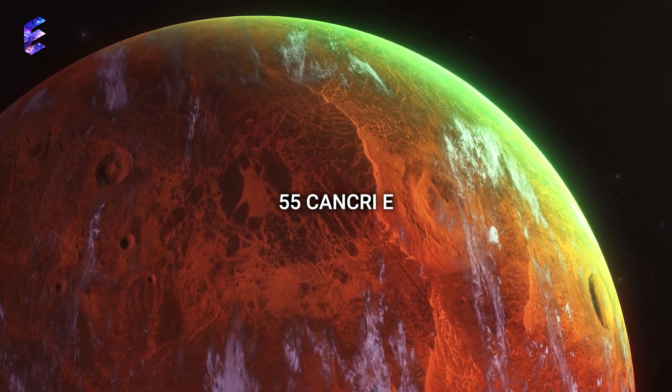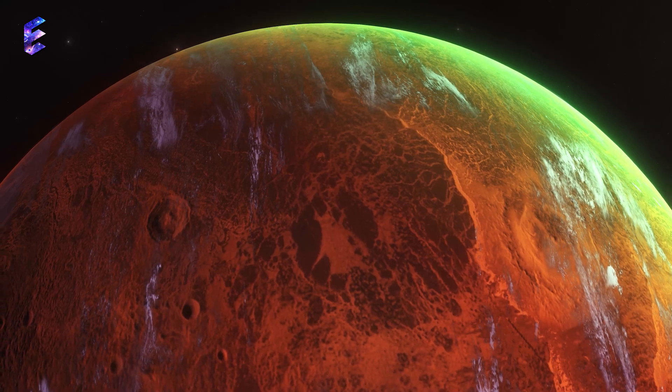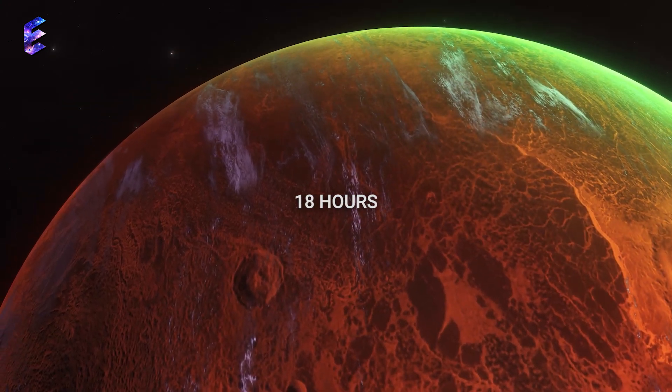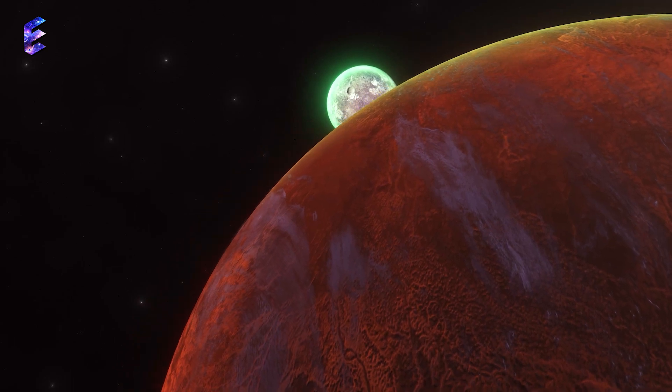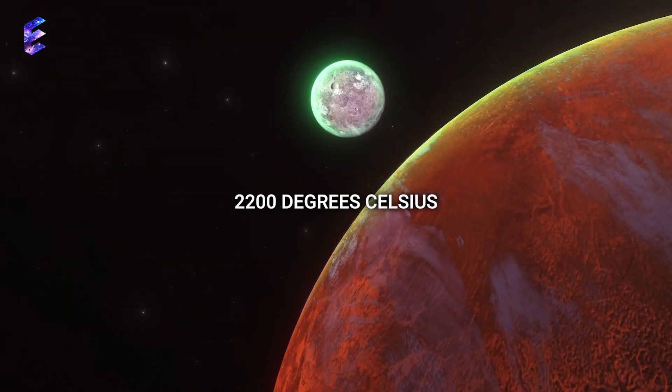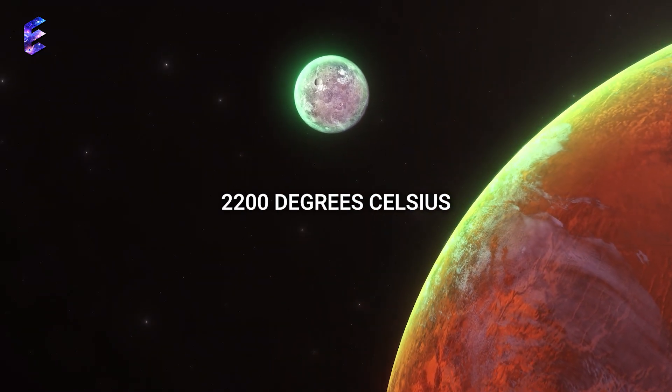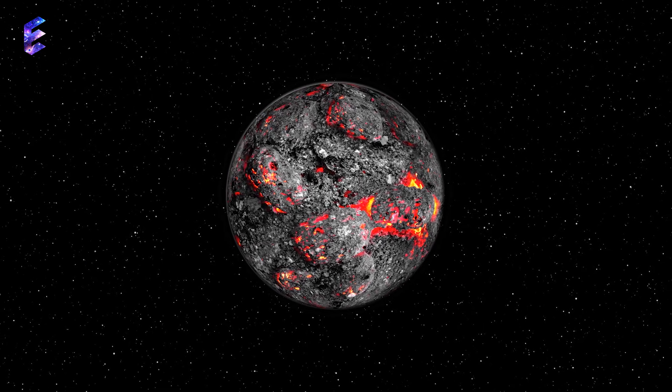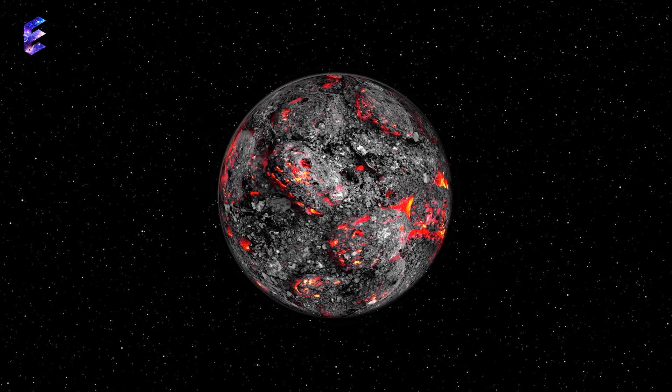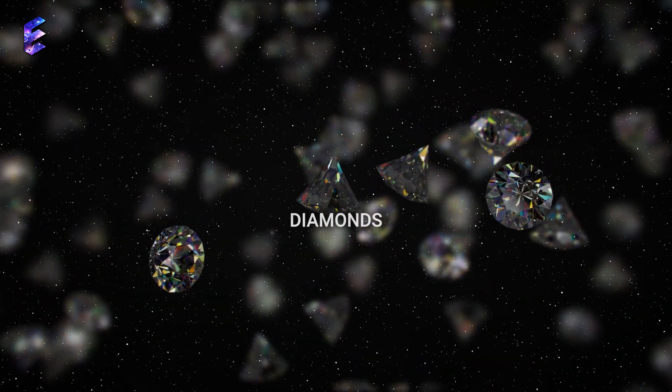orbits so close to its star, 55 Cancri, that it finishes one revolution around its star in just 18 hours. Being so close to its star, its temperature clocks in at a towering 2,200 degrees Celsius. But all the temperature and pressure extremes the planet suffers is possibly creating something of incredible value at its core, diamonds.